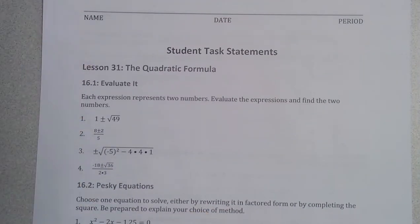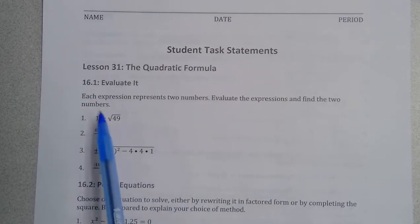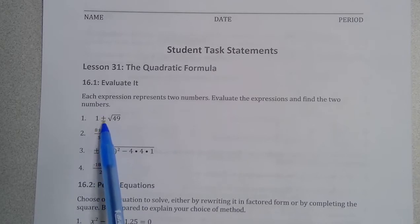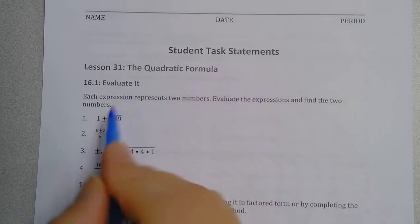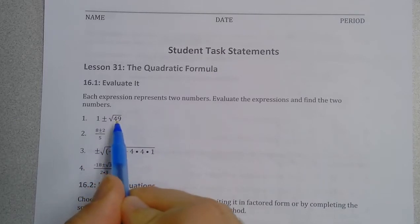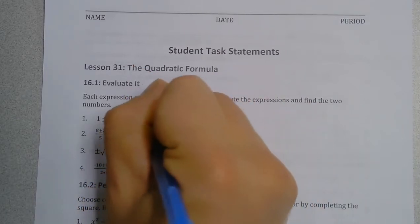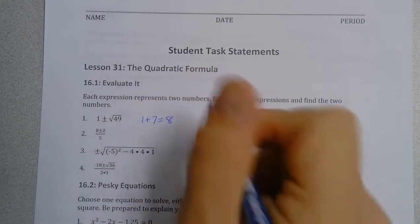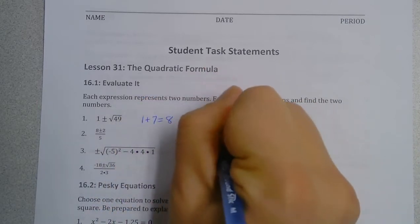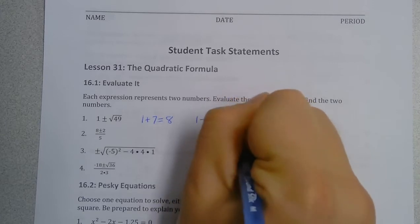Today we're going to start learning about the quadratic formula. First, this is a plus-minus operator, which means I need to take 1 and add the square root of 49, and also take 1 and subtract the square root of 49. The square root of 49 is 7, so I have 1 plus 7 which equals 8, and 1 minus 7 which equals negative 6.